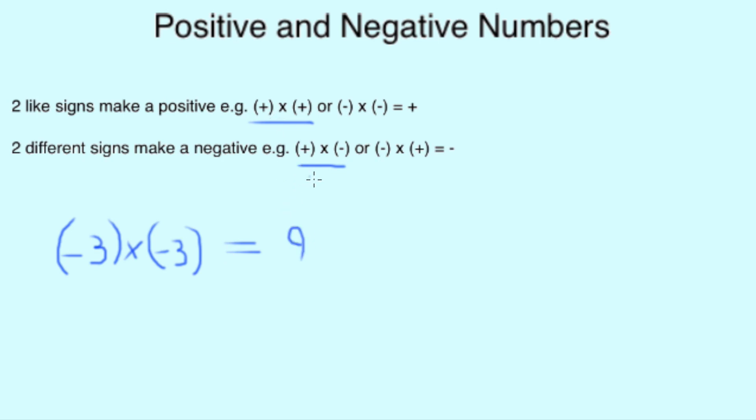Now, using the second rule again, minus 3, we'll keep that as a negative, times by a positive 3, so no brackets needed, is going to be a negative. Again, 3 times 3 is 9. We'll keep the minus in there, so minus 9.